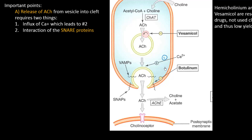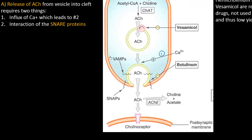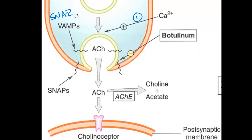This is going to lead to an interaction between these proteins here. This V-AMP is vesicle-associated membrane protein. SNAP is synaptosome-associated protein — synaptosome just refers to the nerve terminal. Their collective name is SNARE proteins: V-snare and T-snare.